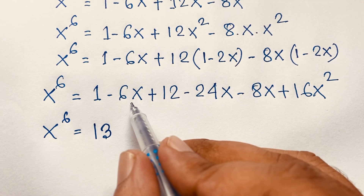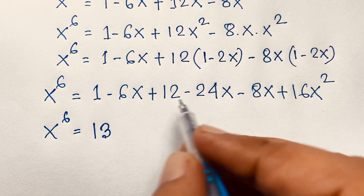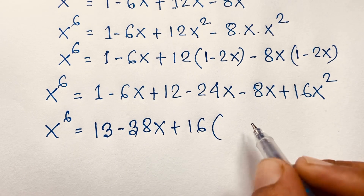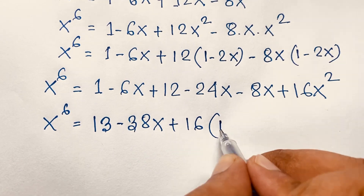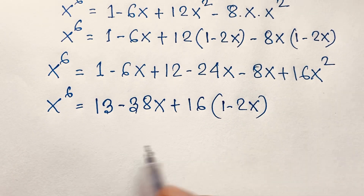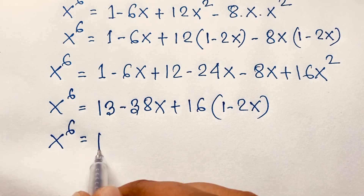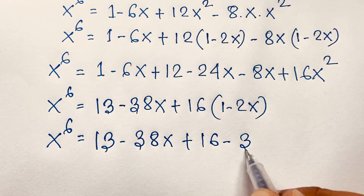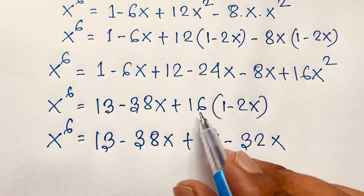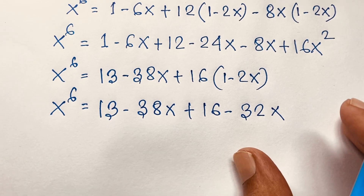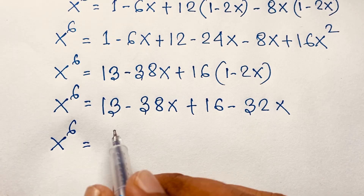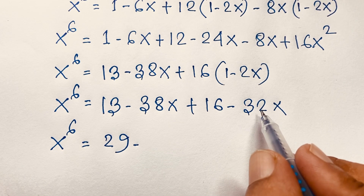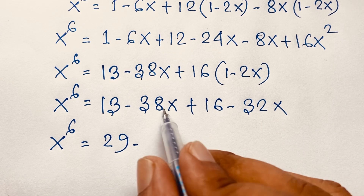Expanding -8x(1 - 2x): -8x + 16x². Substituting x² = 1 - 2x again: 16x² = 16(1 - 2x) = 16 - 32x. So x^6 = 13 - 30x - 8x + 16 - 32x, which combines to x^6 = 29 - 70x.